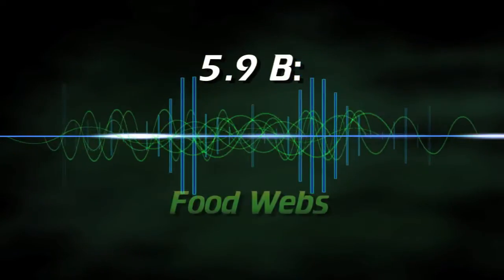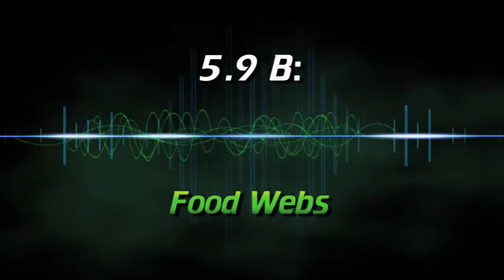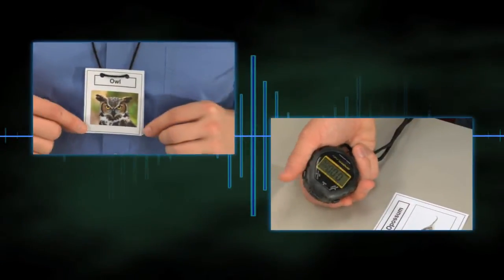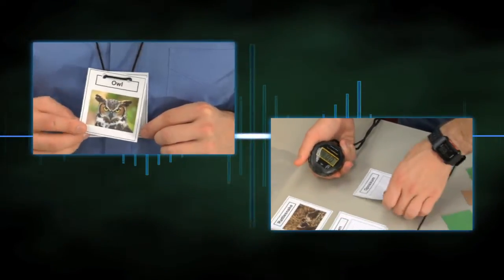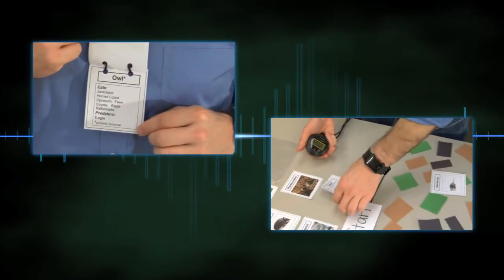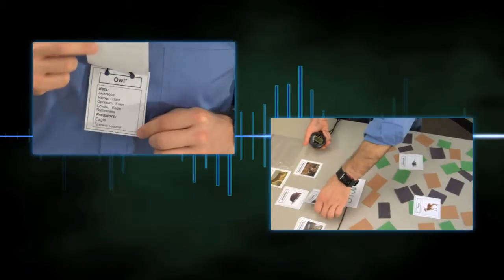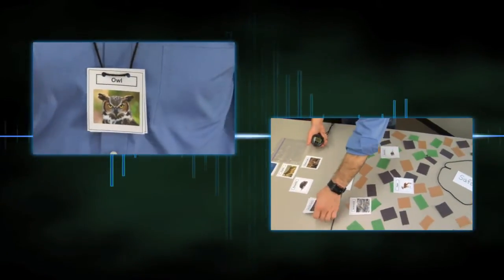5.9 B. Food Webs. In this activity, students emulate animals in the ecosystem and race to see which animal can consume enough to stay alive and outlast its predators.